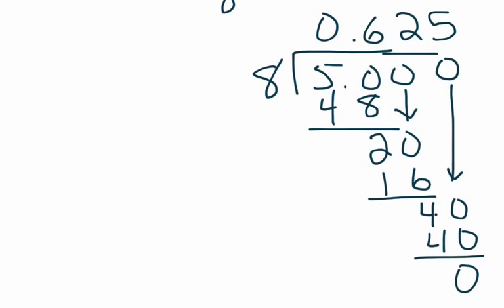So in this problem we see that 5 over 8 is equal to 0.625. Those two numbers are equal to each other. They're equivalent. They're just written in different forms. One is a fraction and one is a decimal. So we get 5 over 8 is equal to 0.625.